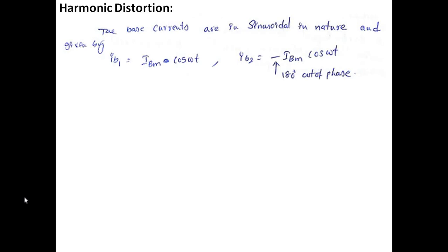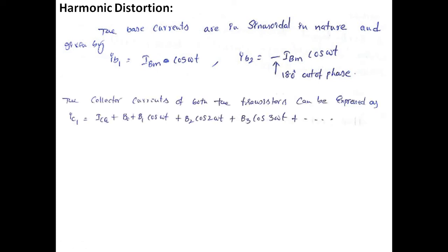We know the two base currents present for both transistors. One transistor conducts for the positive half cycle and another transistor conducts for the negative half cycle, meaning there is a phase shift between the base currents. Transistor 1 has base current IB1 = IBM·cos(ωt) and transistor 2 has base current IB2 = -IBM·cos(ωt), representing a 180° phase shift between them.